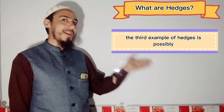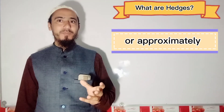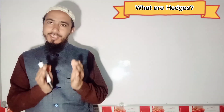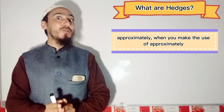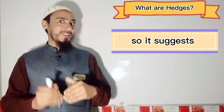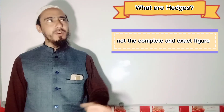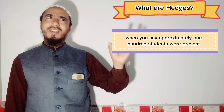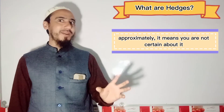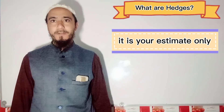The third example of hedges is 'possibly' or 'approximately'. Take the example of 'approximately': when you make use of 'approximately', it suggests your estimate, not the complete and exact figure. When you say 'approximately 100 students were present', it means you are not certain about it — it is your estimate only.